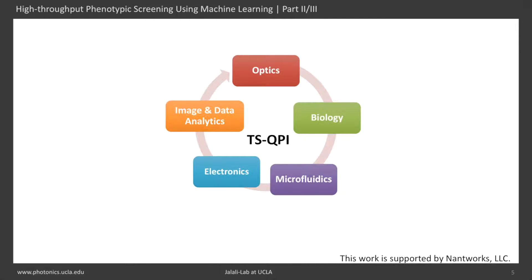This is part 2 of high-throughput phenotypic screening using machine learning. This work is supported by NANDWORKS. The published papers and code can be downloaded from the link below.